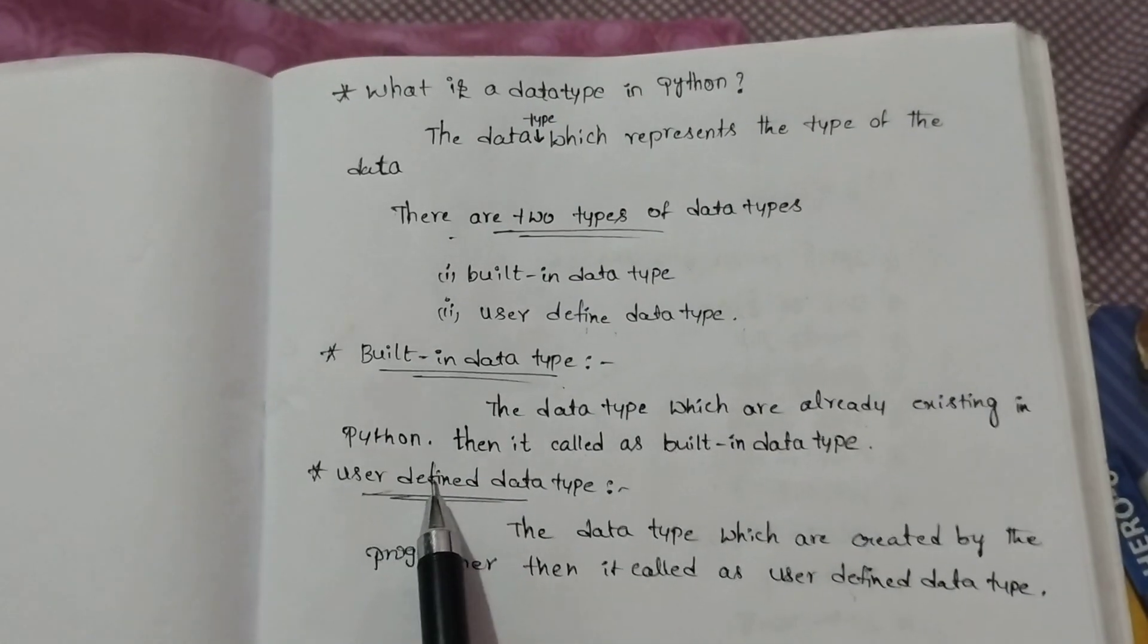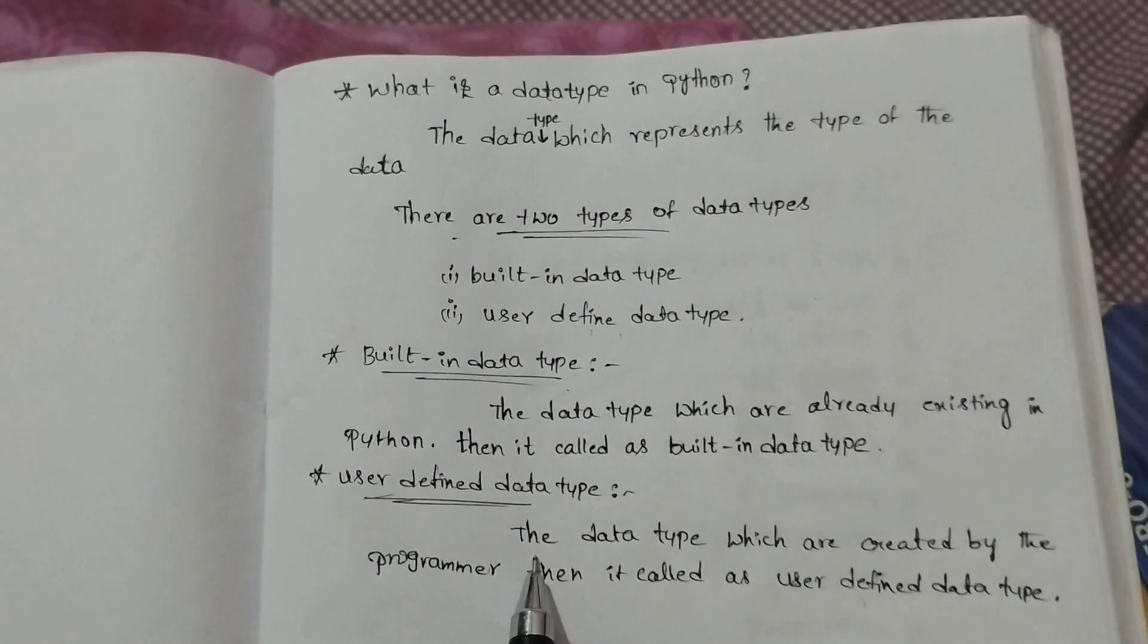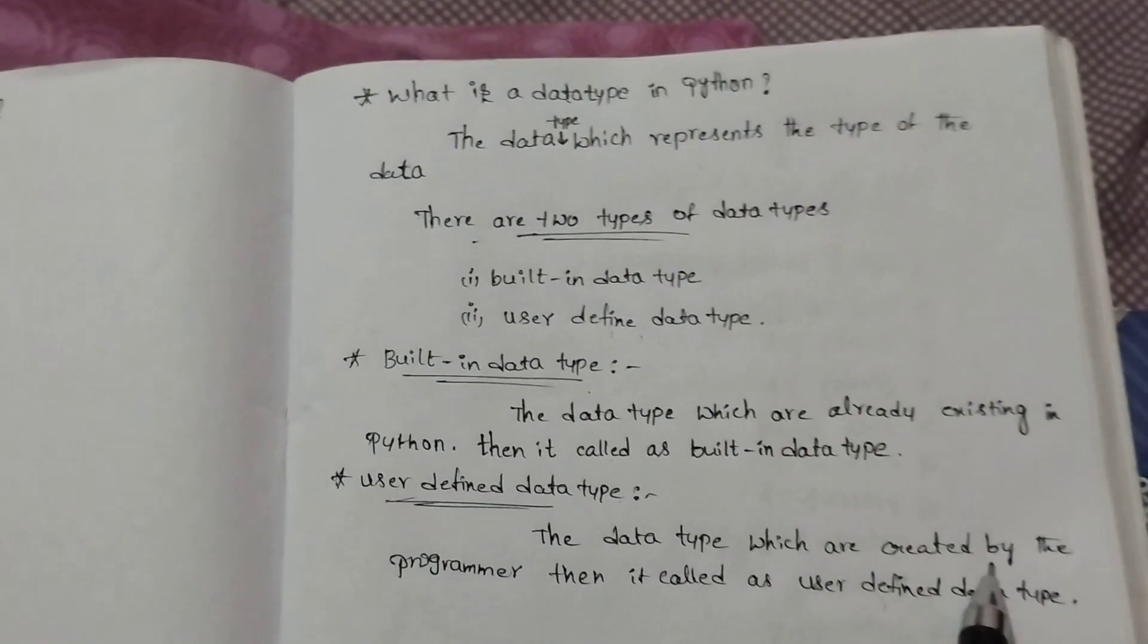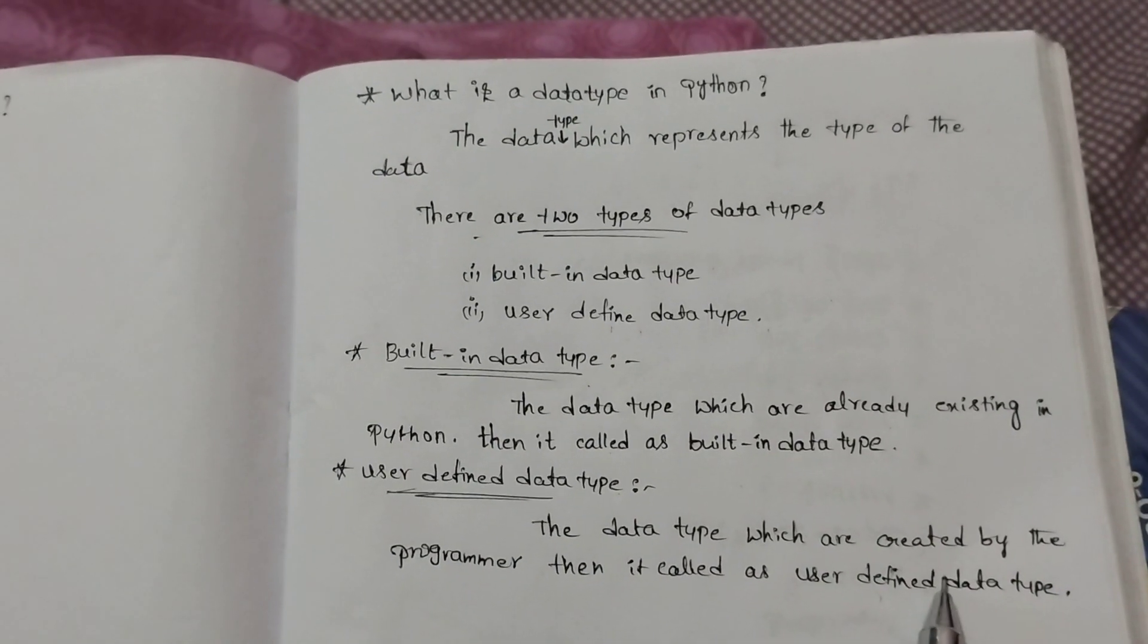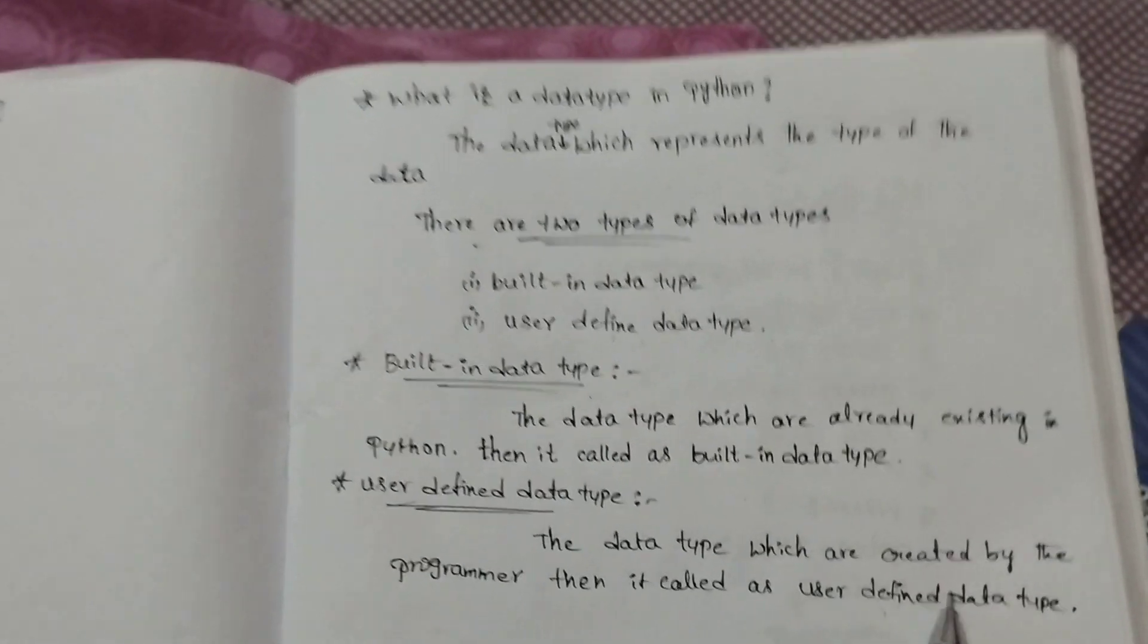And user-defined data type means the data type which are created by the programmer. Then it is called as user-defined data type. Thank you for watching this video.